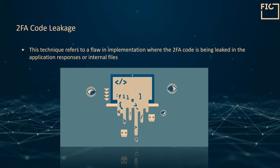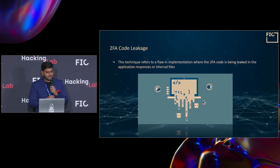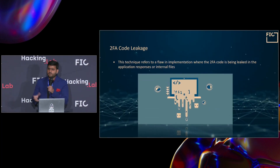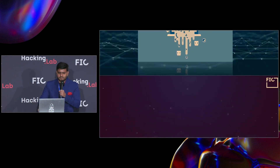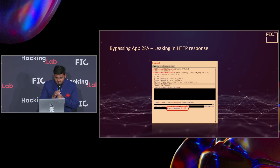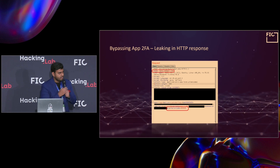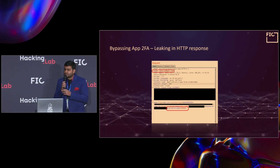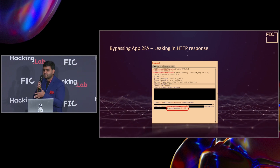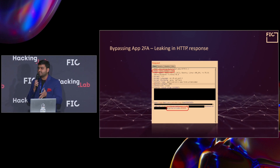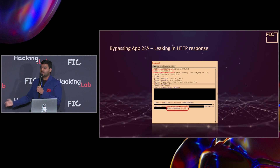2FA code leakage is a technique where the 2FA code is being leaked either in the internal files or the application's responses. As you can see here, the above is the request and the below is the response. The application actually sent the 2FA code as a response to the request in order to be stored in the HTML files, meaning the application locally stored the 2FA code so that it could be compared by the user.